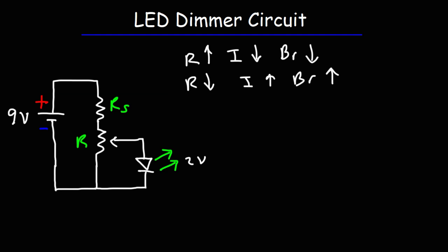Now let's talk about how we can calculate the minimum and the maximum current that can flow in the circuit. So let's set RS to 510 ohms, and the variable resistor, we're going to use a 20 kilohm potentiometer for that. So with this information, go ahead and calculate the minimum and the maximum current that can flow in the LED.